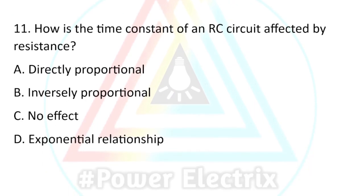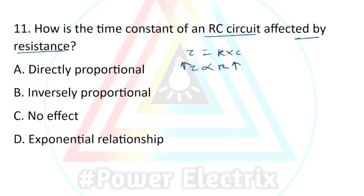Question number eleven: How is the time constant of an RC circuit affected by resistance? For an RC circuit, tau equals R times C, so tau is directly proportional to R. If resistance increases, tau increases. The effect is directly proportional.